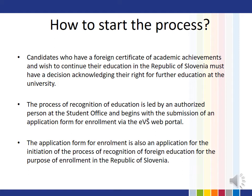We will start with the section on how to start the process. Candidates who have a foreign certificate of academic achievements and wish to continue their education in the Republic of Slovenia must have a decision acknowledging their right for further education at the University. The process of recognition of education is led by an authorized person at the student office and begins with the submission of an application form for enrollment via the Evše web portal. The application form for enrollment is also an application for the initiation of the process of recognition of foreign education for the purpose of enrollment in the Republic of Slovenia.